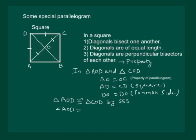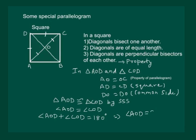This implies that angle AOD is equal to angle COD. But they also form a linear pair, so angle AOD plus angle COD equals 180 degrees. This gives angle AOD equal to 90 degrees, which is also equal to angle COD. Hence it is proved that the diagonals of a square are perpendicular bisectors of each other.